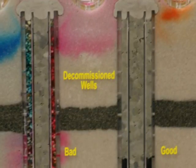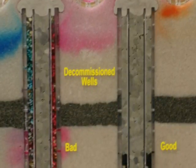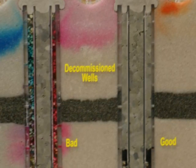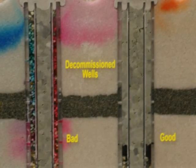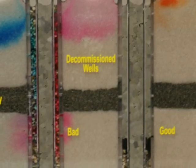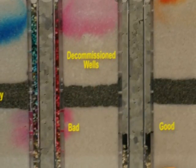In summary, contaminants can enter the annulus of a decommissioned well and move down into confined water-bearing zones. Adding grout to the annulus during the decommissioning process prevents contaminant movement through the annulus to confined aquifers.